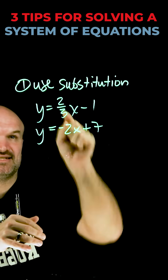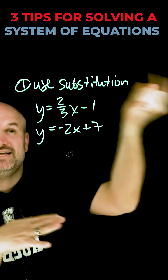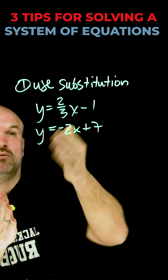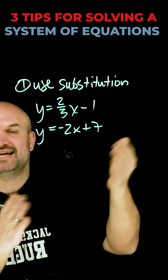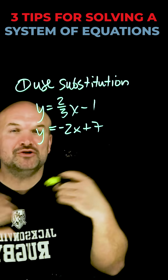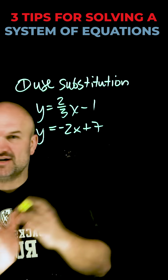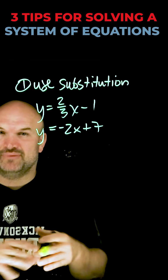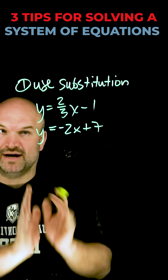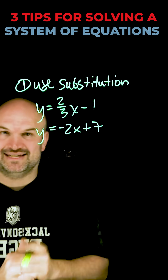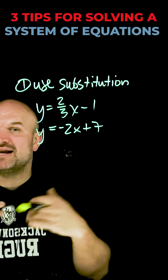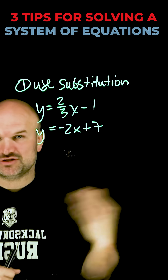So you can see in this example, I have y equals two-thirds x minus one, and I have y equals negative 2x plus seven. You don't need to have both variables already isolated, but at least if you have one where it looks like this, that is when I use substitution.